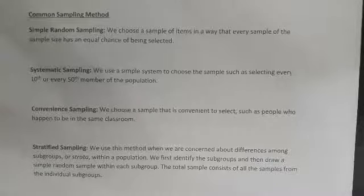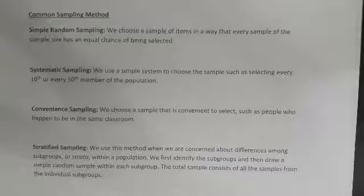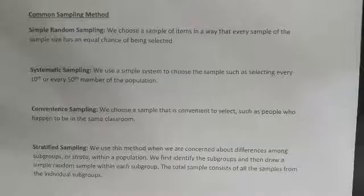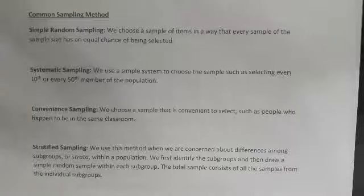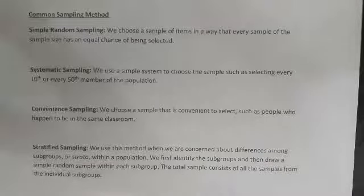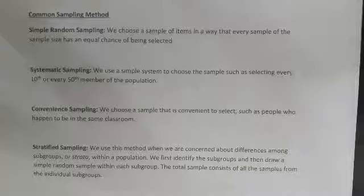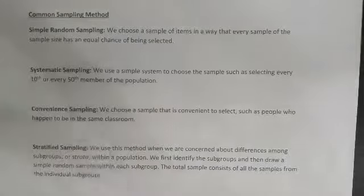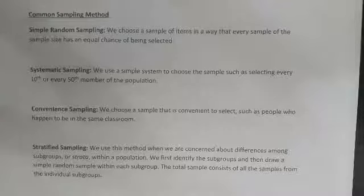Simple random sampling means every sample of the given size has an equal chance of being selected. You can use random number generators or shuffle things — though we have to ask, is anything truly random? An algorithm producing random numbers isn't perfectly random, but it works well enough for equally probable selection.